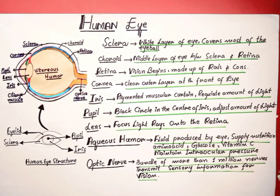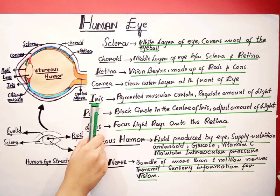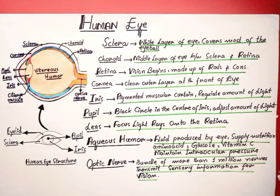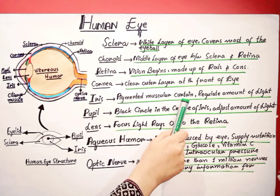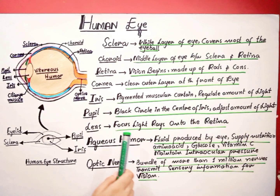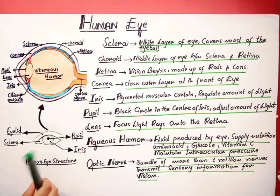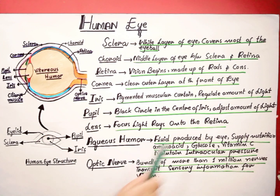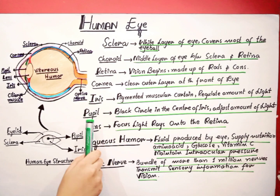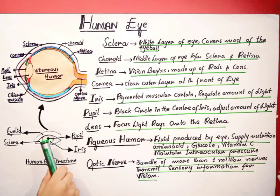Now we have the iris. The iris is the colored portion of our eye. It is a highly pigmented muscular layer responsible for regulating the amount of light that gets into the eye by opening and closing of the pupil. The pupil is the black circle in the center of the iris. The iris and pupil work together to adjust and regulate the amount of light which enters the eye.